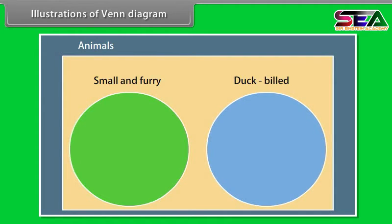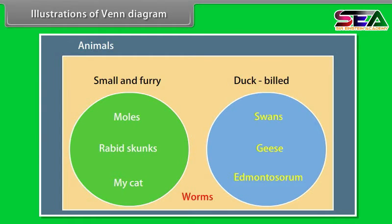Now we'll fill in or populate the diagram. Moles, rabbit skunks and my cat are all small and furry. Swans, geese and Edmontosaurus are all duck-bills. Worms are small but not furry. And horses are furry but not small and neither is a duck-bill. However, they are animals. They fit inside our universe but outside the circles.